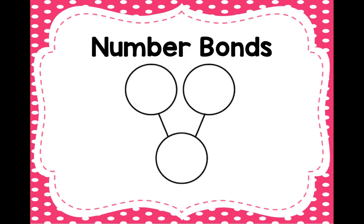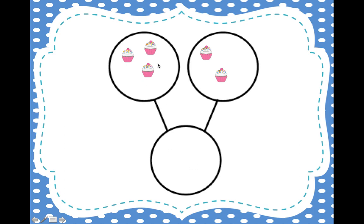Number bonds. We've already learned about number bonds, but today my number bond looks a little bit different. Last time we did it, the circle that was all by itself was at the top and the two circles were on the bottom. Today the number bond is upside down. We're going to start with the cupcakes in two separate circles and bring them all together into the one big circle to see how many they make together.